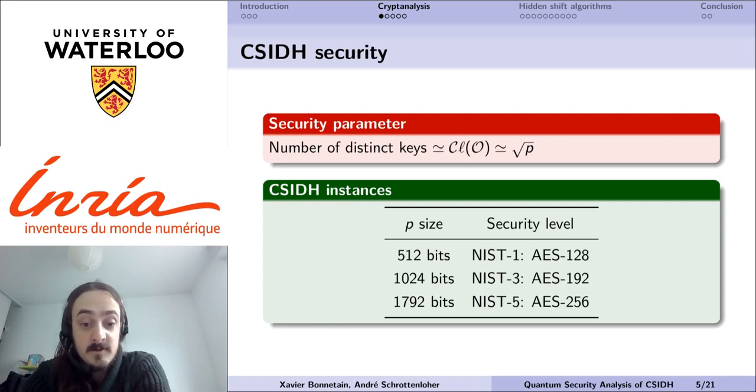Each is expected to have a security that corresponds to a NIST level, so NIST 1 to 5. I recall that this NIST level means that it shall be as hard to break the system than to perform both a classical or a quantum exhaustive search on the corresponding variant of AES.